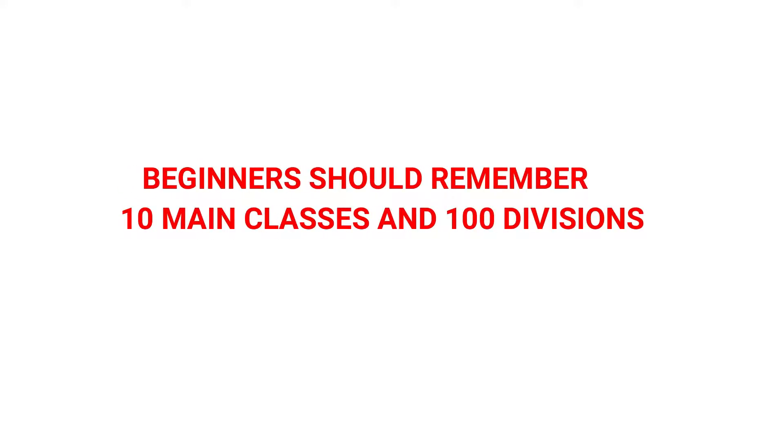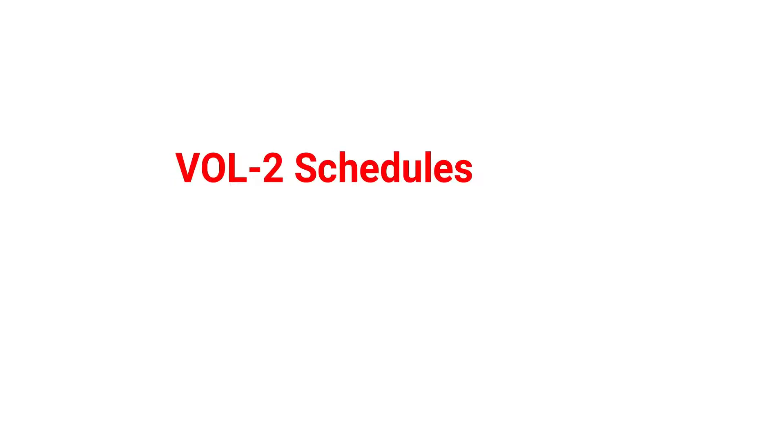For beginners, you should remember 10 main classes and further unread divisions. Volume 2 is for schedules, where each discipline is arranged in numerical order. There are three summaries, and each of these three summaries is further divided into subsections, which are given in the schedules in Volume 2.